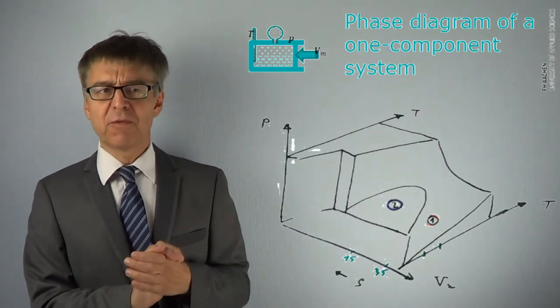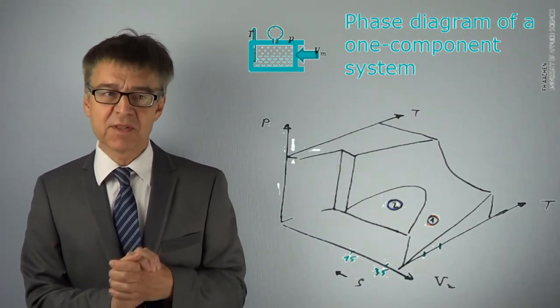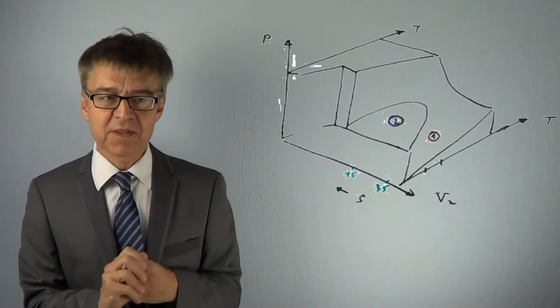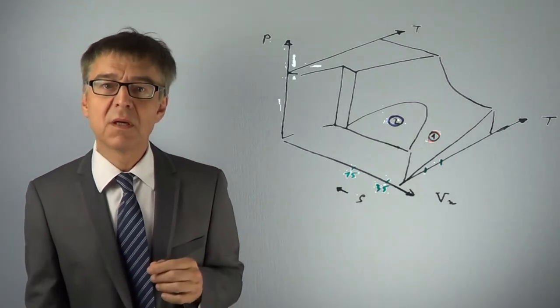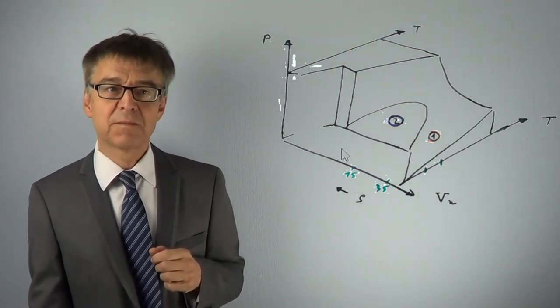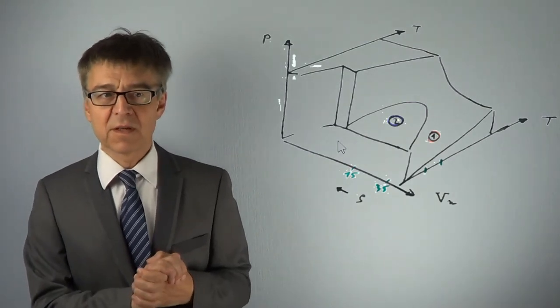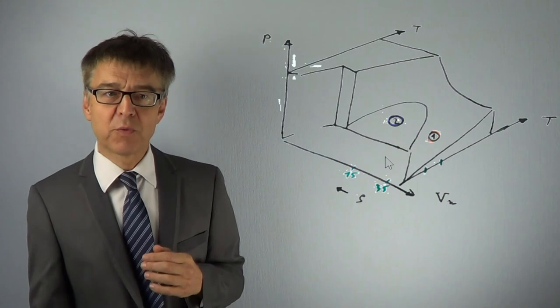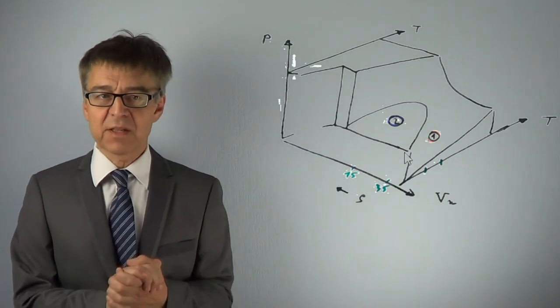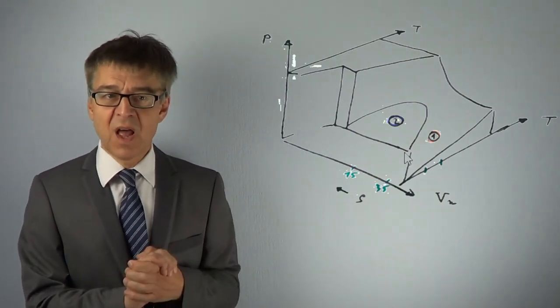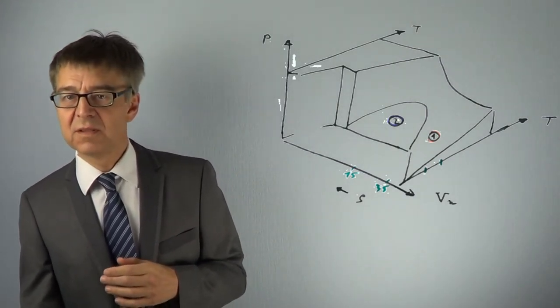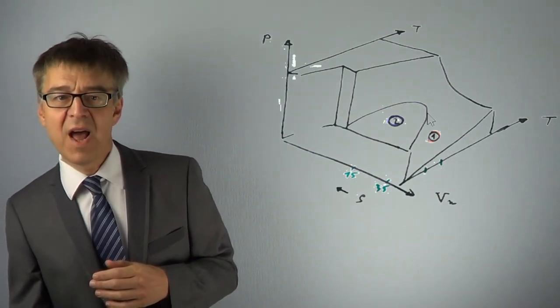If we do a graphical representation of all possible states of a single component system, we obtain a surface of states in the PVT space. This surface consists of homogeneous and heterogeneous areas, separated by binodal curves. In the heterogeneous areas, we may draw tie lines, lines that connect phases in equilibrium. Other characteristics of the phase diagram are the critical point and the triple line.